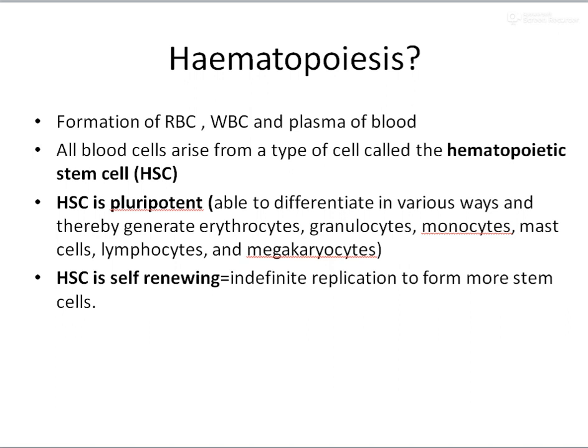The hematopoietic stem cell can either form RBC, or it can form a type of WBC such as granulocytes, or sometimes monocytes and lymphocytes — that is the case of pluripotency. This hematopoietic stem cell is also considered to be self-renewing, meaning they can undergo indefinite replication to form more stem cells.